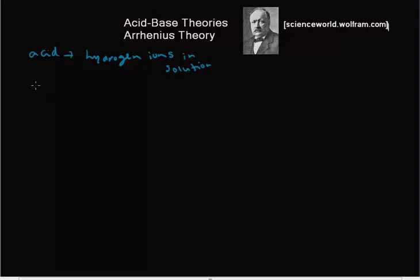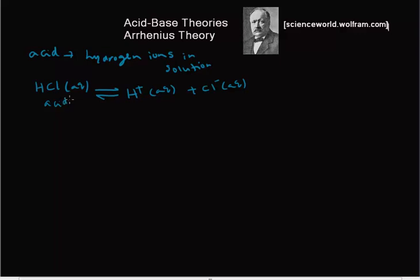So let's say I have hydrochloric acid, aqueous, and if it dissociates — this is a reversible reaction — it should produce hydrogen ions and chloride ions, Cl⁻. He called this substance an acid because it has the ability to produce H⁺ ions in solution.